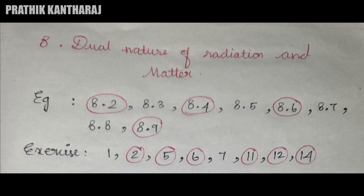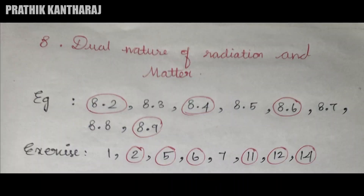In the 8th chapter, Dual Nature of Radiation and Matter, examples: 8.2, 3, 4, 5, 6, 7, 8, 9. This is a very important chapter especially for numericals. You can check wavelength, frequency, and the possibilities. Exercise: 1, 2, 5, 6, 7, 11, 12, 14.